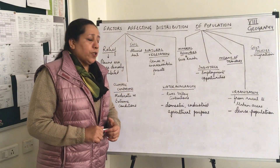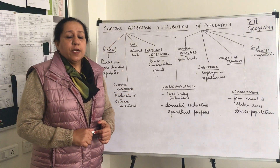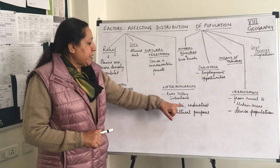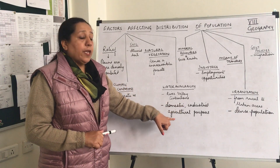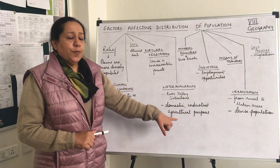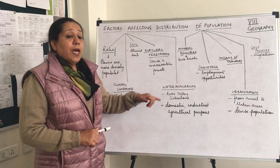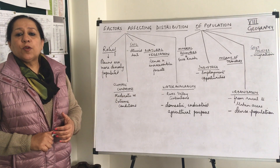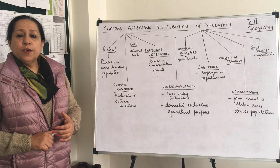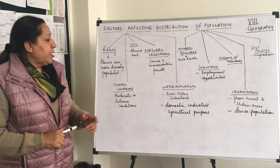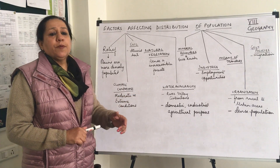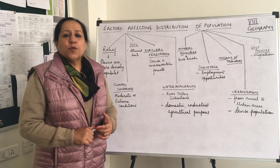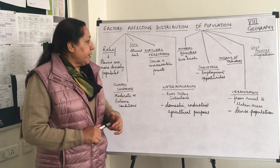The next factor is water availability. Water is required for domestic, industrial, and agricultural purposes, and thus our very first civilizations developed along the sides of rivers. Even now, water is a major factor for attracting population to a particular area.